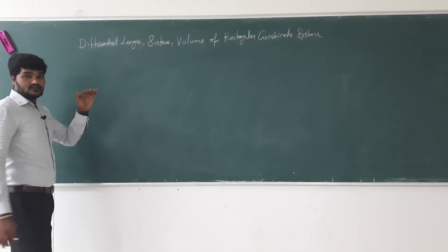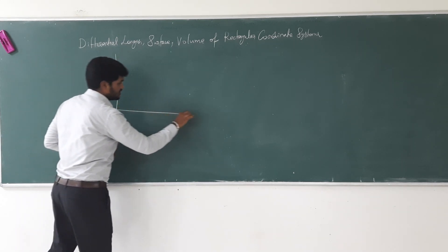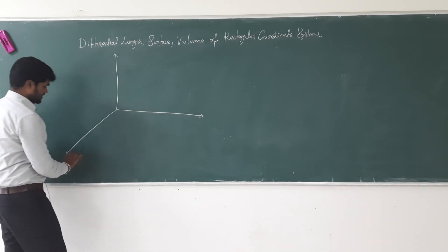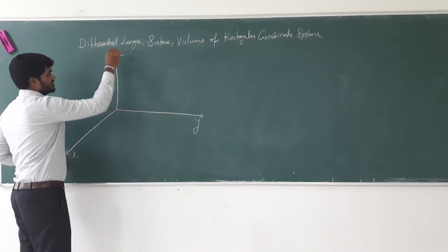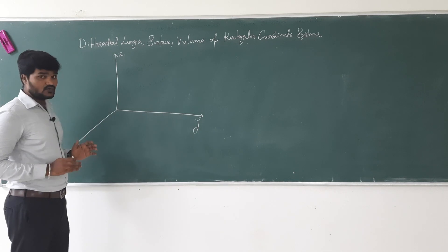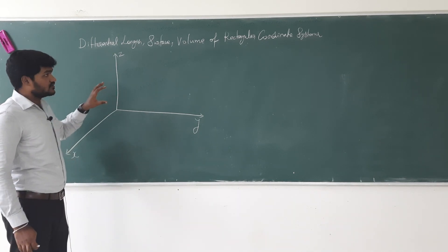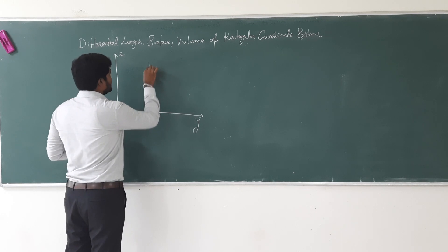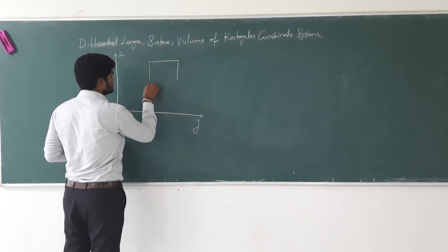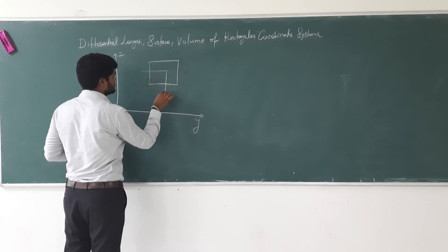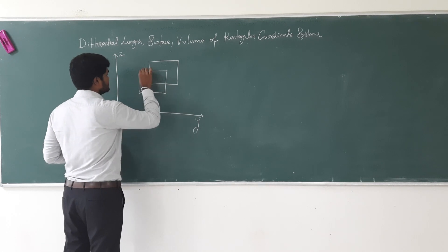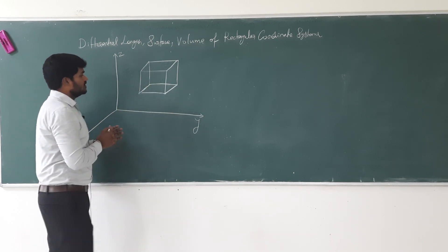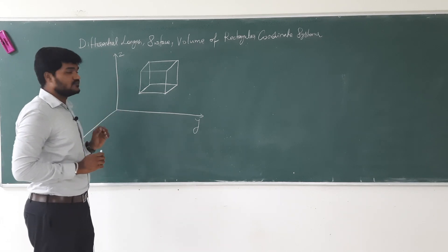First we consider the rectangular coordinate system. This is a three-dimensional rectangular coordinate system — this is the x direction, this is the y direction, and this is the z direction. Now we are going to take a small portion in the three-dimensional rectangular coordinate system for analysis purposes.